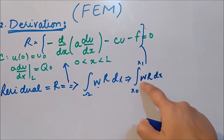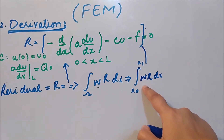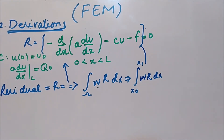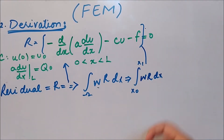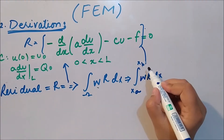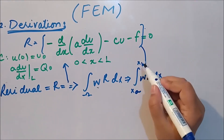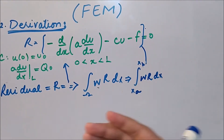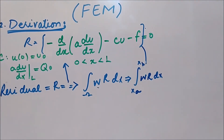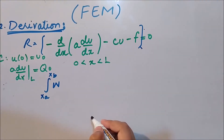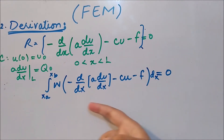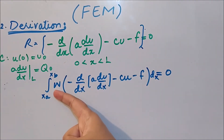What is not yet known is w, the shape function, which we will derive for each element. Writing it generally, instead of x_node to x_1, I write x_a to x_b, where a to b is the domain of every element and a and b can vary because we have n elements in our mesh. Let's plug in the value of R into the weighted integral statement.